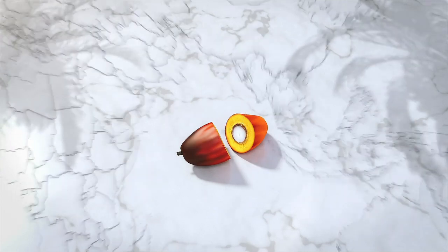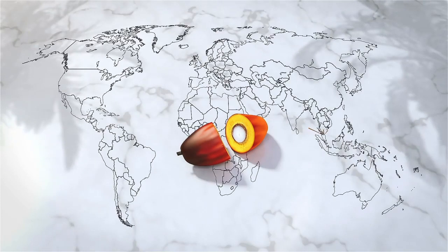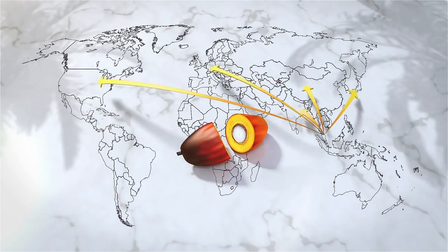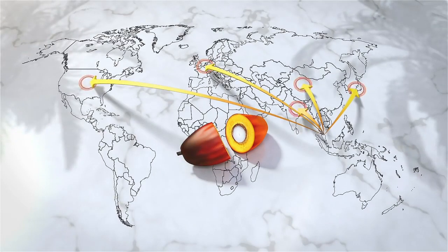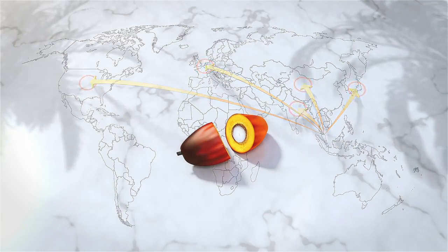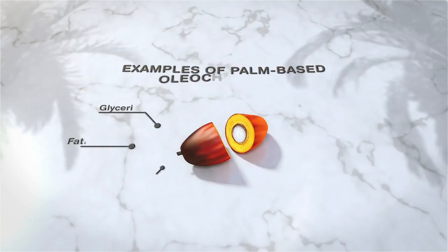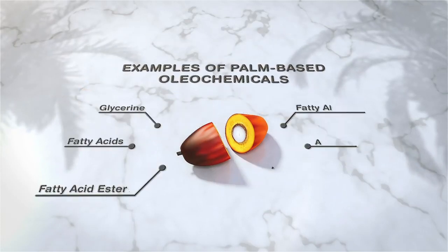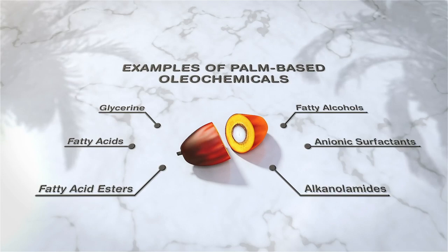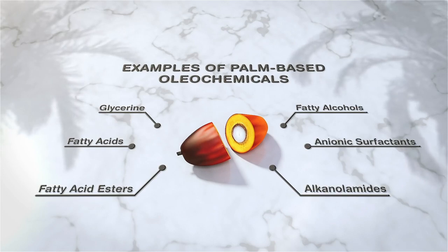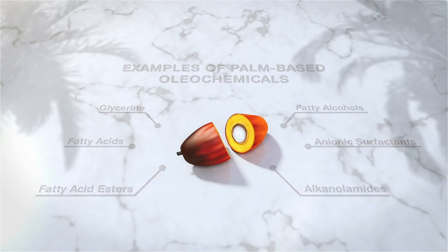Malaysia is one of the world's largest oleochemicals producers and exporters. To give you an idea, here are some examples of commonly used palm-based oleochemicals and derivatives, all of which are readily found in your cosmetic and personal care products.